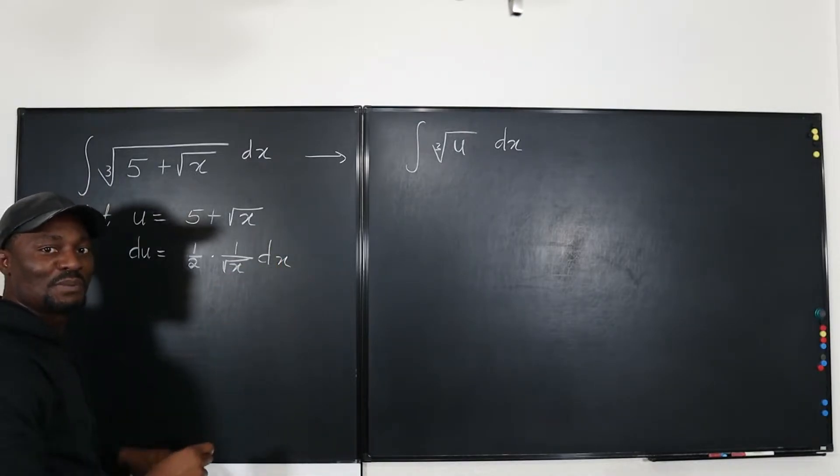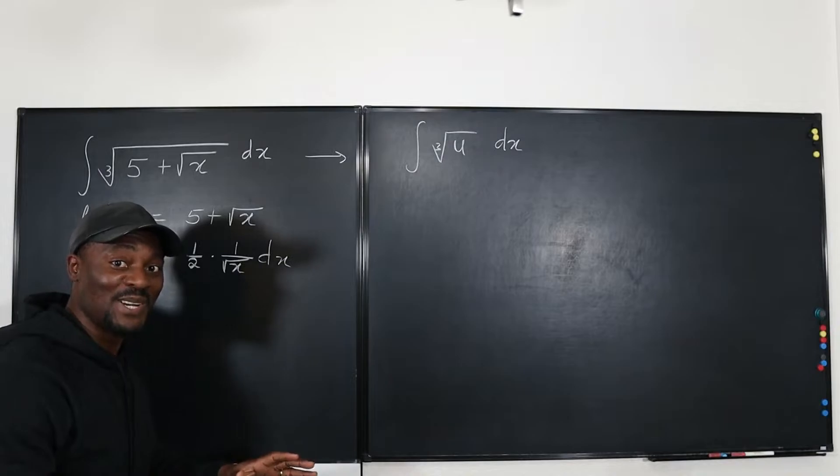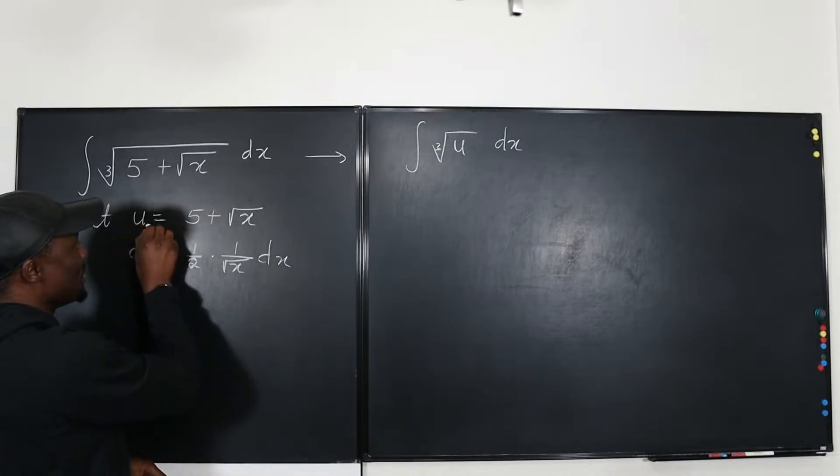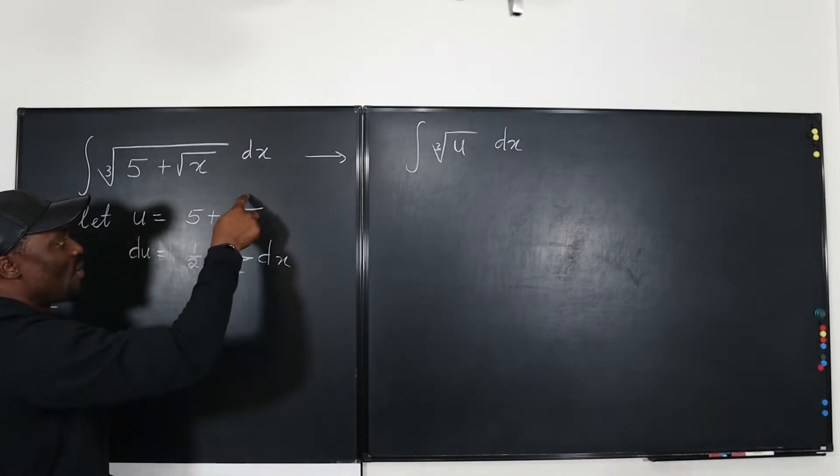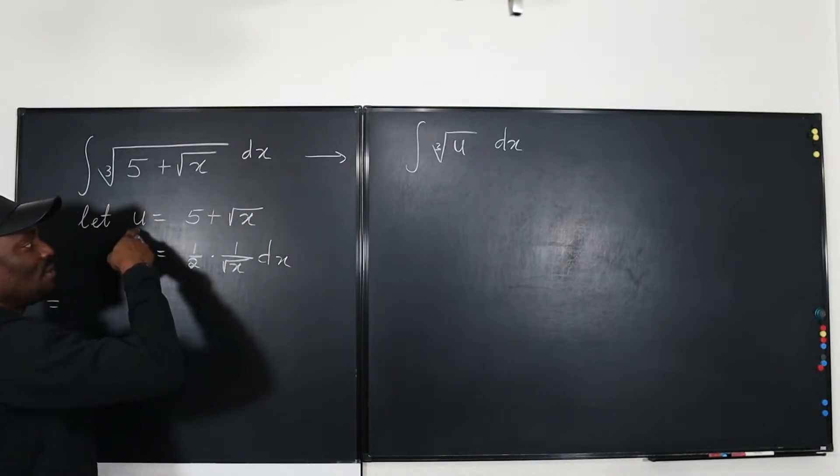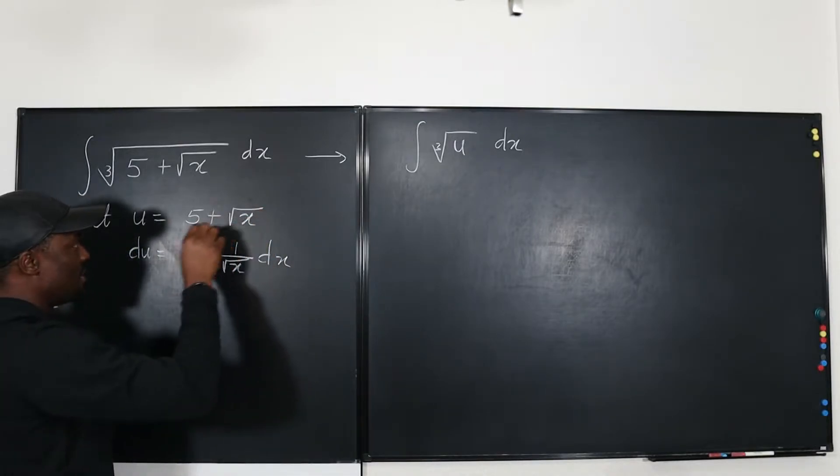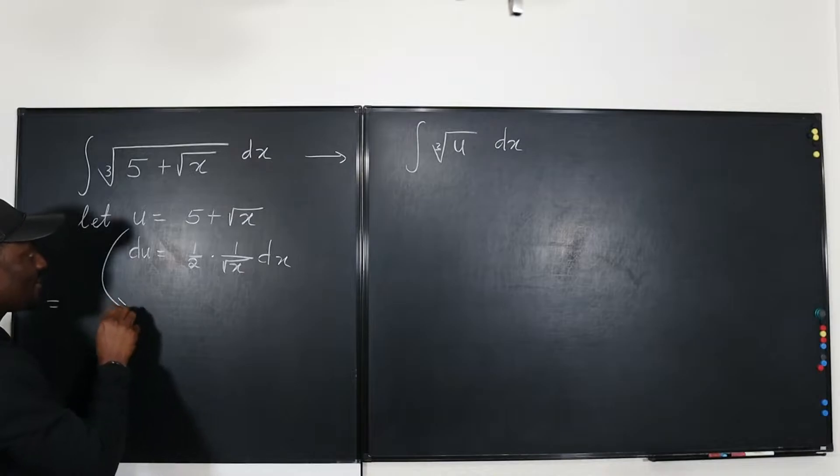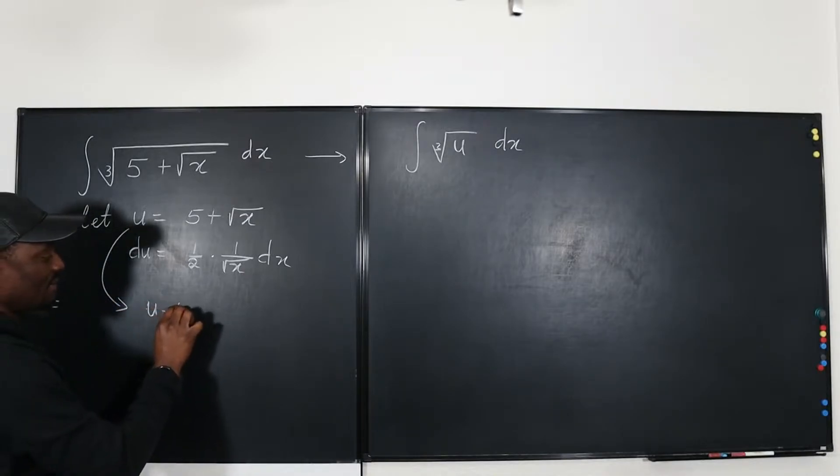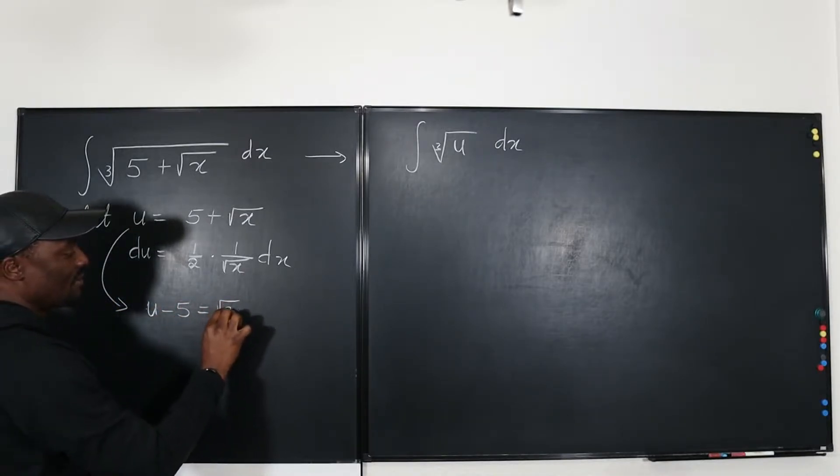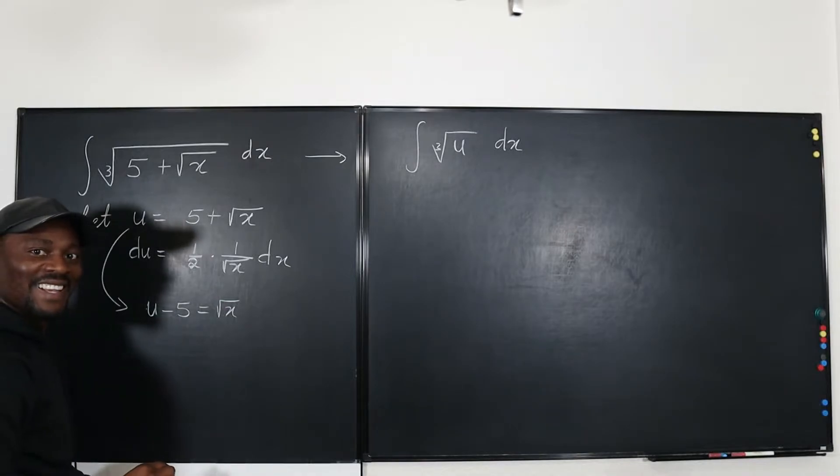You go back to your substitution. This will always happen. Go back to your substitution here and say is there a way I can write square root of x in terms of u? Obviously from here we can see that u minus 5 will be the square root of x. You see how easy it becomes.